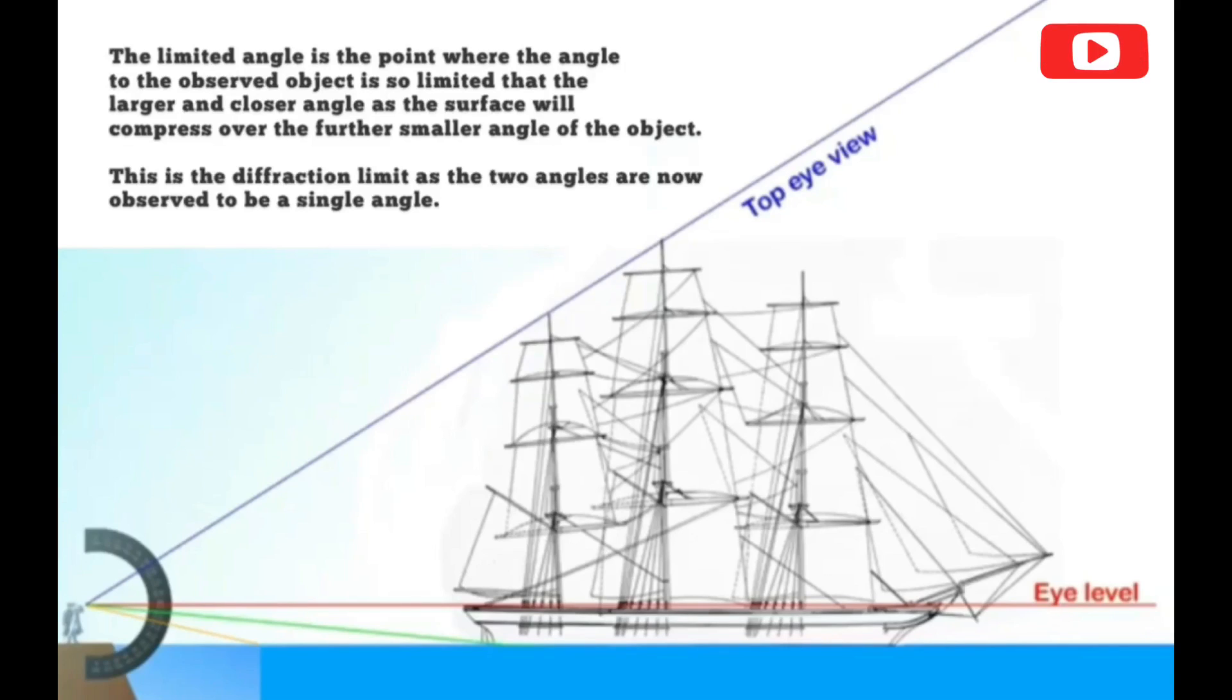Simply put, this is the reason why we see bottom-up obstruction with things going into the distance, as the larger close angle of the deck is compressing over the smaller, further away angle of the ship's hull, because the resolution angle is just too limited to be able to resolve. In essence, it's just too many pixels crammed into one small area.